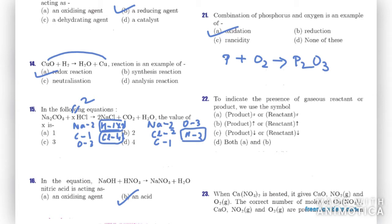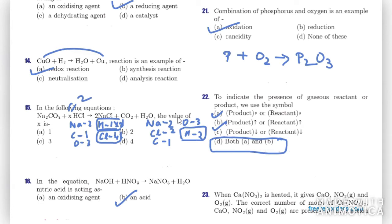Question twenty-two: to indicate the presence of a gaseous reactant or product, we use which symbol? For gaseous reactants and products we use the symbol — the right option is D. Either A or B can be used, but the right option in this case is D.